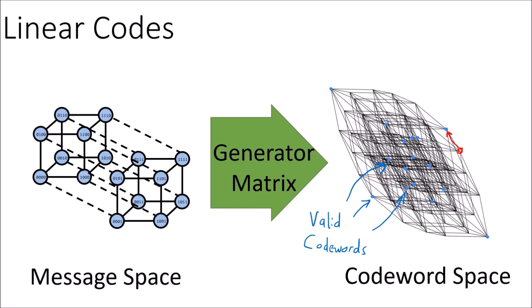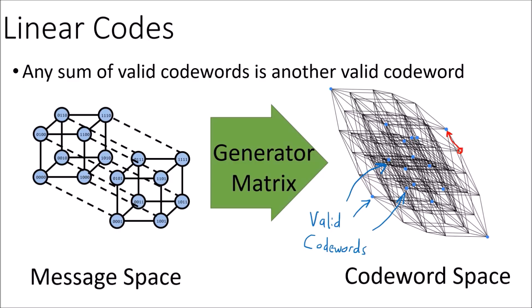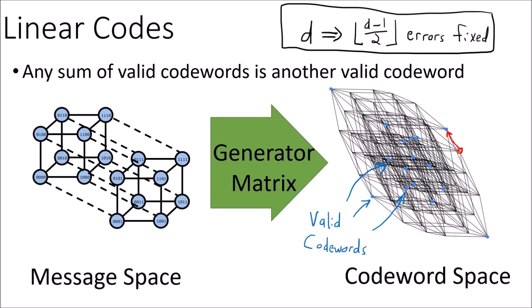We also learned that because the generator matrix is a linear map, it turns out that with linear codes, the sum of any two valid codewords is another valid codeword. When there is a minimum distance d between any pair of valid codewords, we are guaranteed to be able to fix (d−1)/2 bit errors in a codeword, rounded down to the nearest integer.